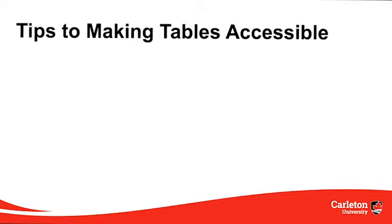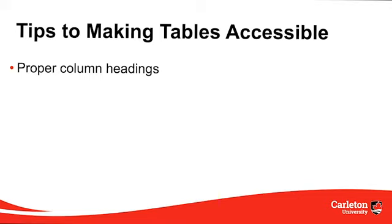If you must use a table, here are a few tips to follow to make your tables accessible. Tip 1: Use proper column headings with tables. This provides context for your reader, which, as previously mentioned, can be vital for screen readers.